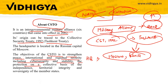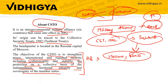CSTO aims at the protection, on a collective basis, of the independence, territorial integrity, and sovereignty of member states. It also includes strengthening peace, international and regional security, including cyber security. Key facts to remember: 2002, Tashkent Treaty, Moscow headquarters, and it is a military alliance.